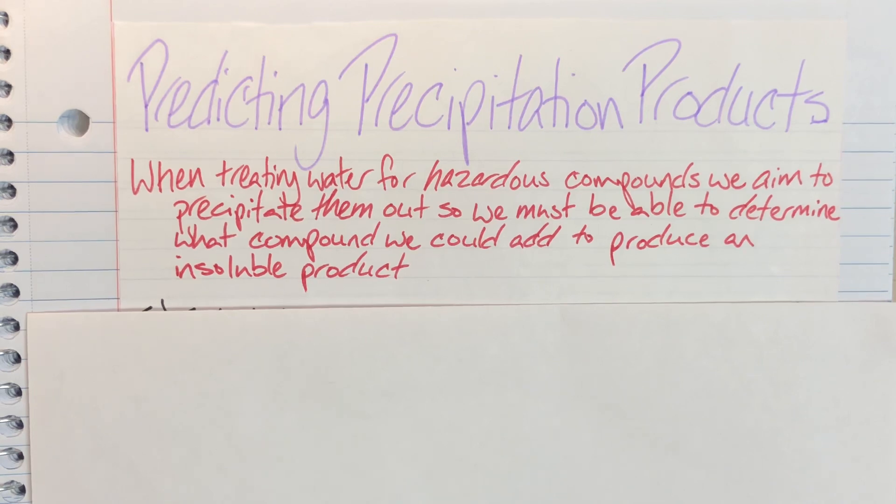That means we need to be able to pick different reactants so that we are able to precipitate out the undesirable compound.